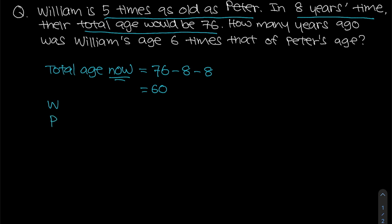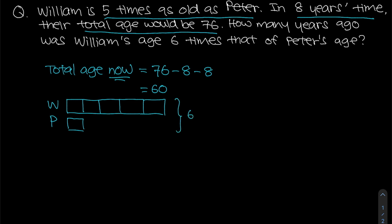They also mention that William is five times as old as Peter. So what we can do is draw a bar model to help us solve this problem. We have William and Peter — William is five times as old as Peter, so I'm going to draw five boxes for William and one box for Peter.